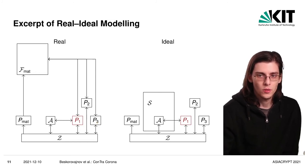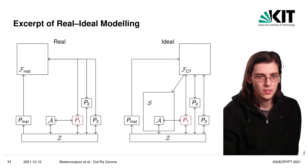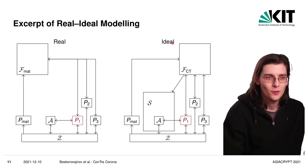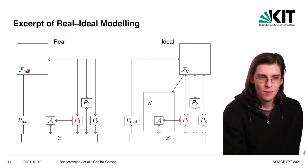And in the ideal world, we would replace all the protocol execution with an ideal functionality. This is FCT. And FCT will just receive the inputs from all the parties. So the parties here on the left, they execute the protocol as specified. And the parties here on the right will just forward all their inputs and receive their outputs directly from FCT.